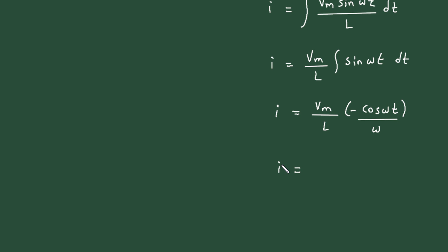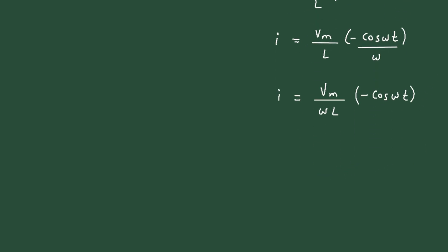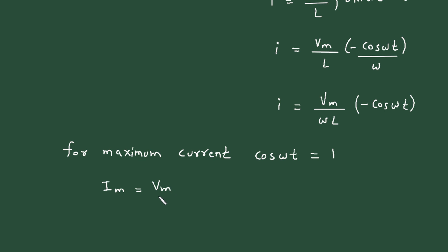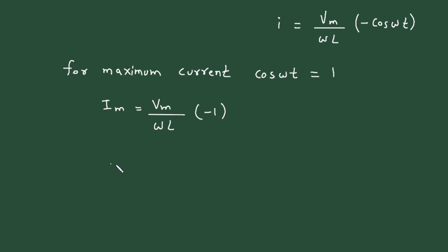We can write this as I equal to Vm/(ωL) times minus cos(ωt). For maximum current, cos(ωt) should equal 1, so the maximum current Im equals minus Vm/(ωL).